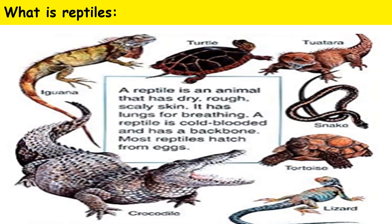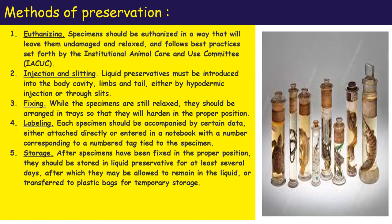What is a reptile? A reptile is an animal that has dry, rough, and scaly skin. It has lungs for breathing, it is cold-blooded, and it has a backbone. Most reptiles hatch from eggs. Examples of reptiles include turtle, snake, tortoise, crocodile, lizard, and iguana.